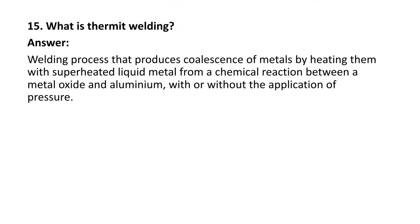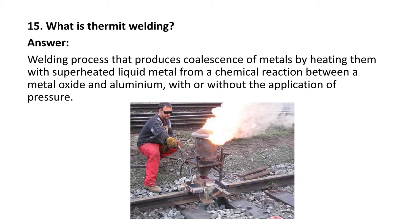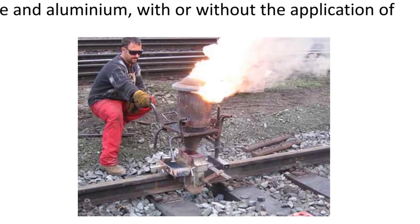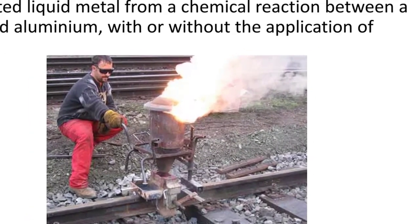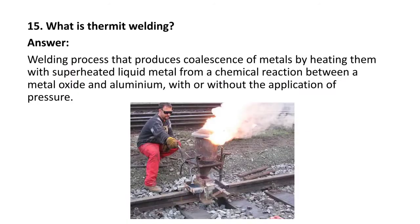Next question: what is thermite welding? It is a welding process that produces coalescence of metals by heating them with a superheated liquid metal from a chemical reaction between a metal oxide and aluminum, with or without the application of pressure. Thermite welding is generally used to join railway tracks. The combustion of metal oxide and aluminum produces heat, and the two parts get joined together.